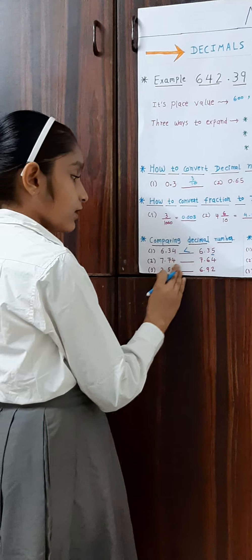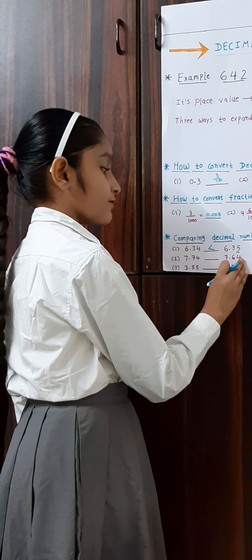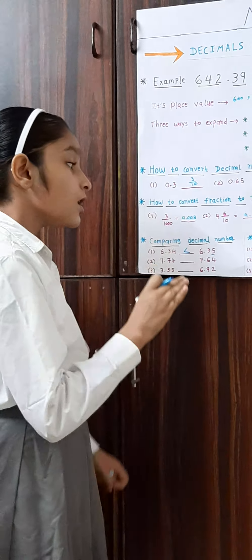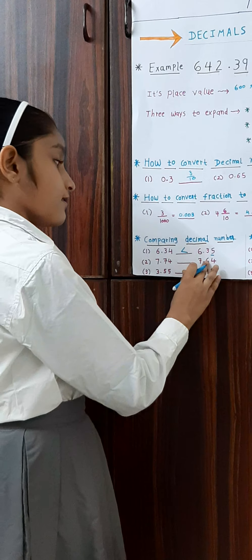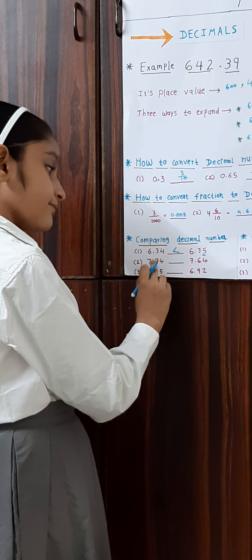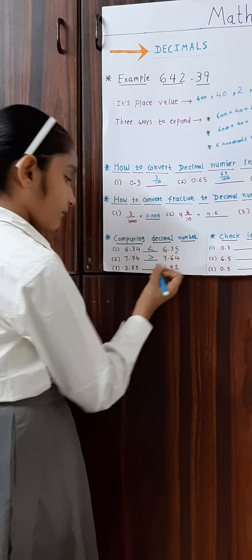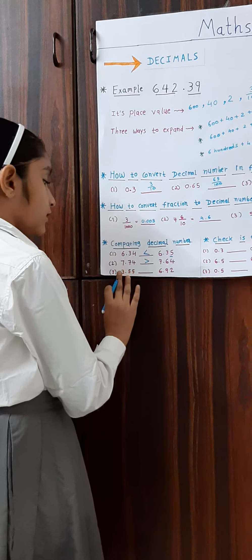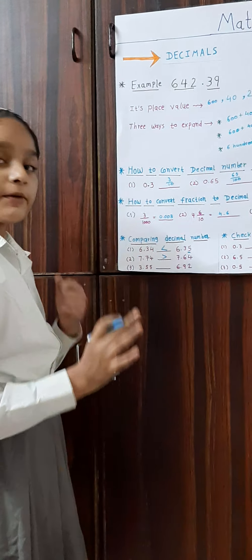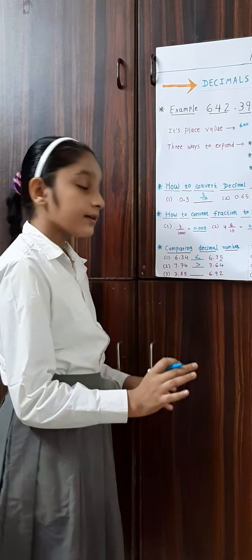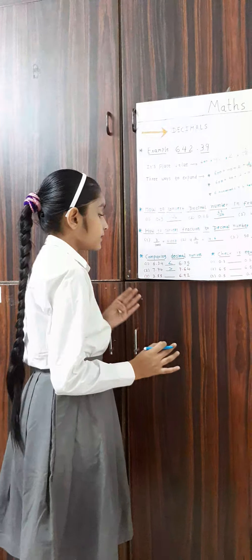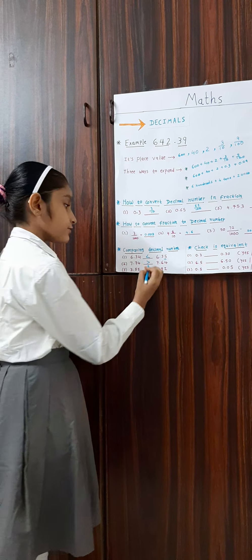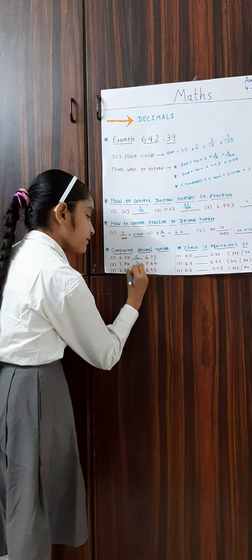Next, 7.74 and 7.64: 7 equals 7, but 7 and 6 are not equal, so we can recognize that 7.74 is bigger. For 3.55 and 6.92, this is very easy — we can recognize very fast that 3 and 6 are not equal, so 6.92 is the bigger one.